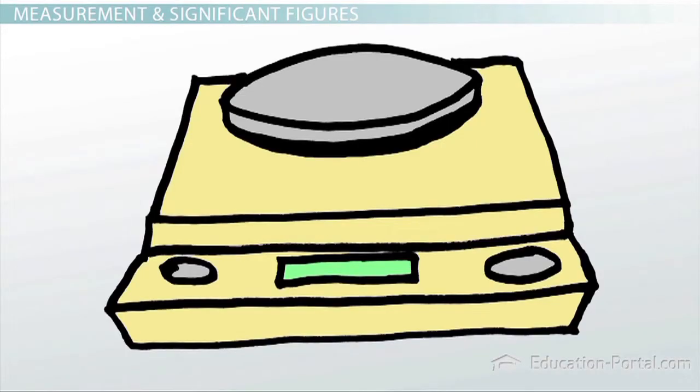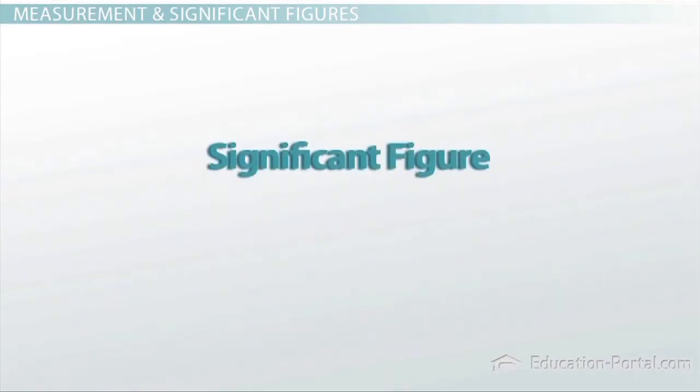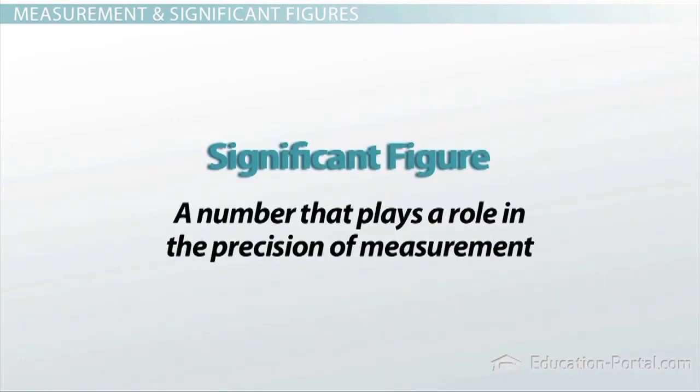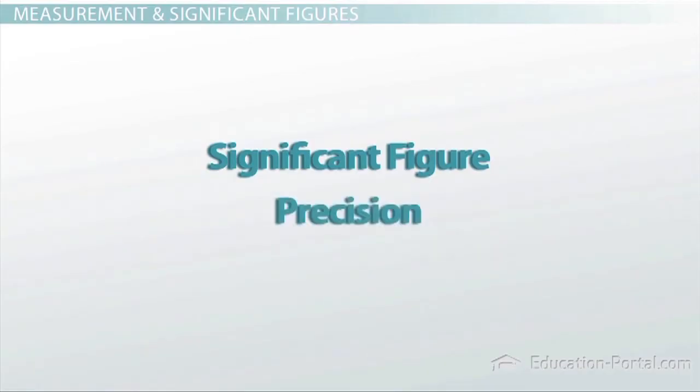This zero is so important it is called a significant figure. A significant figure is a number that plays a role in the precision of a measurement. Don't confuse the word significant with important or certain. If a number is significant, it's just kept track of when reporting measured results and making calculations. It's very important to be able to work with significant figures correctly, so both the measurement and the precision of the instrument used are communicated.